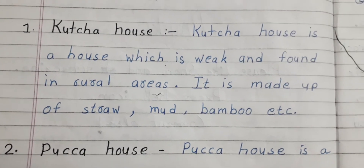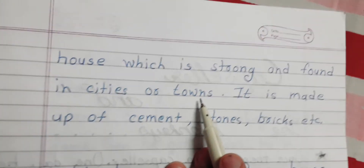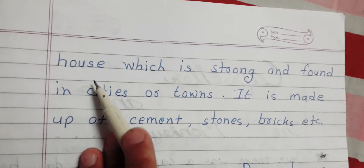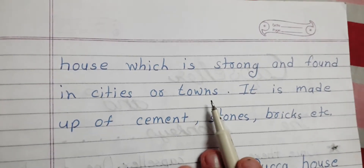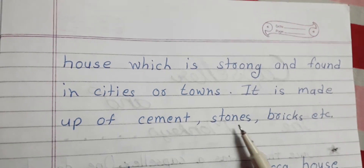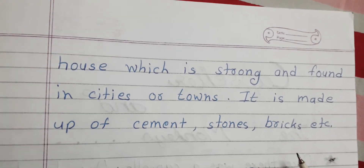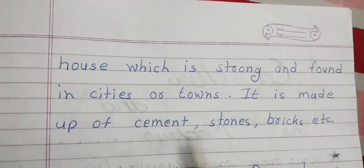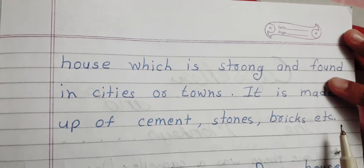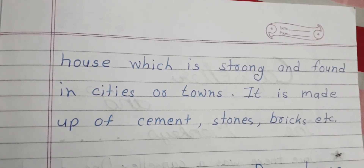Now let's see the second type: pakka house. A pakka house is a house which is strong and found in cities or towns. It is made up of cement, stones, bricks, etc.